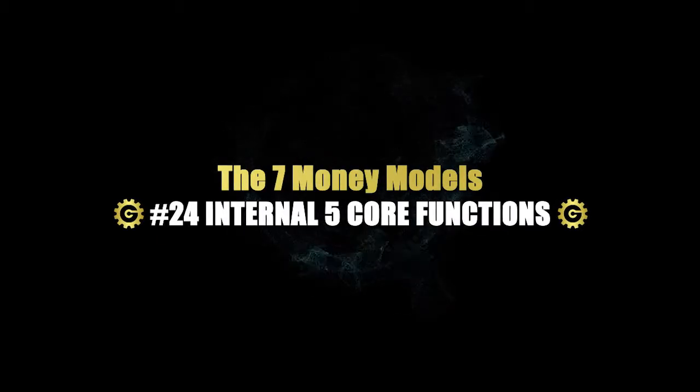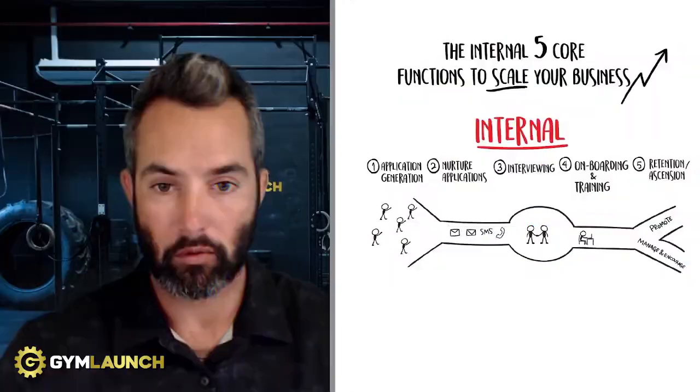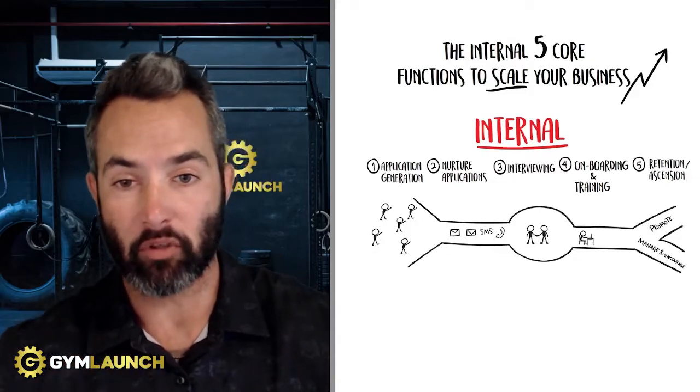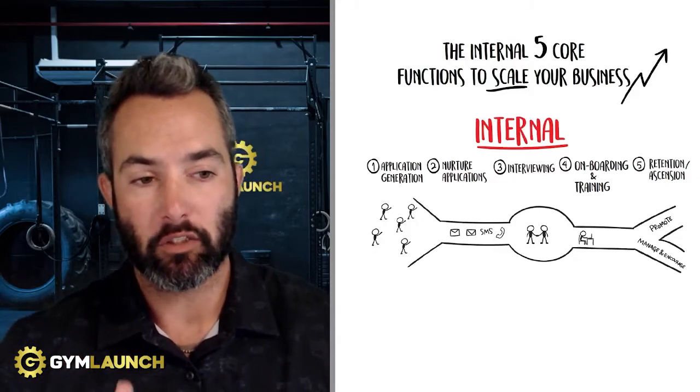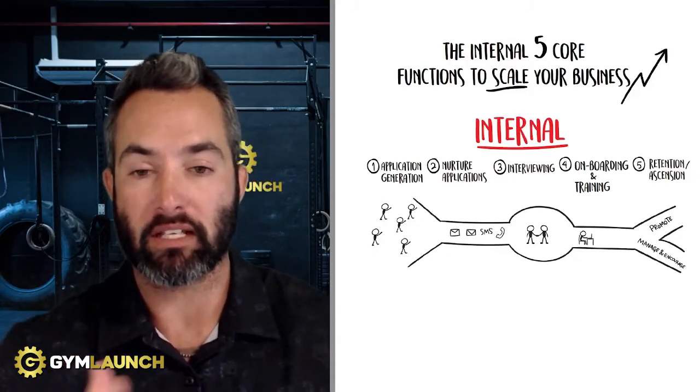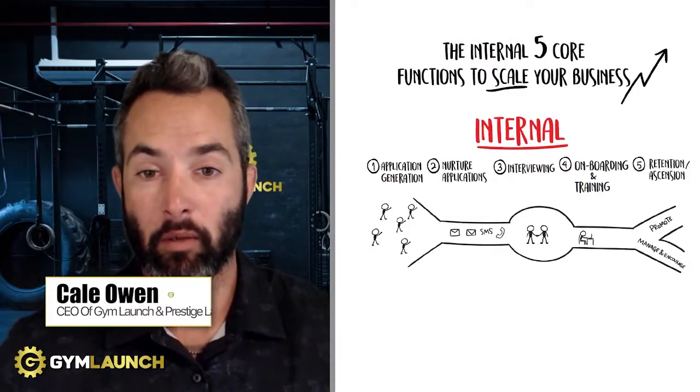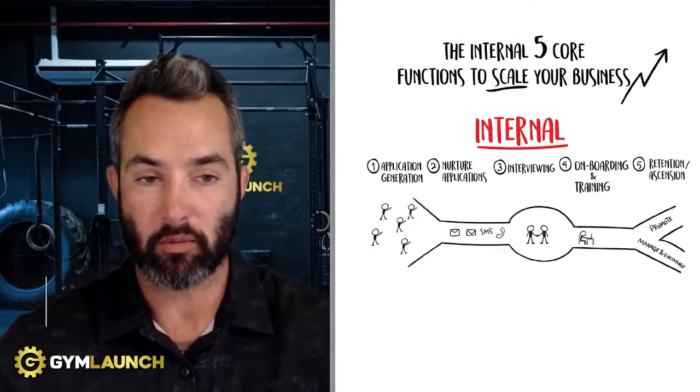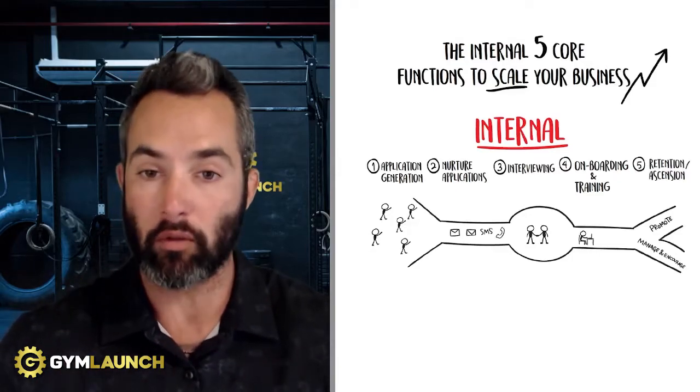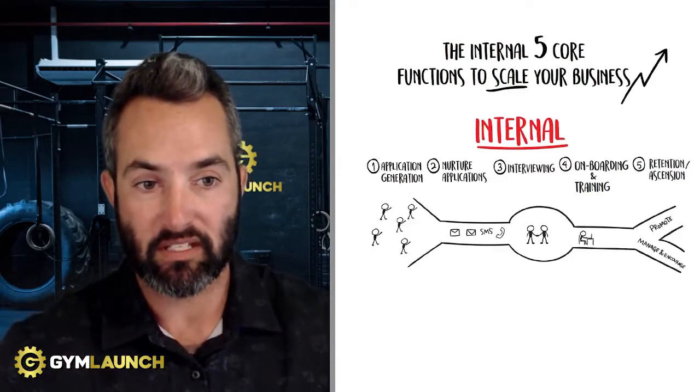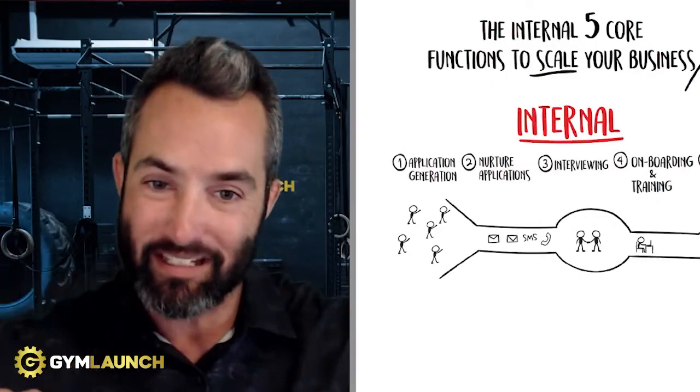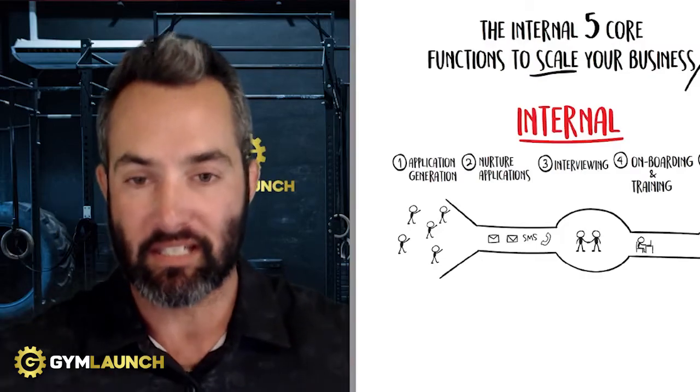If you want to grow and scale your business, here are the internal five core functions that you're going to need to scale your business and what we have learned at Gym Launch and Prestige Labs to grow to over $100 million in revenue over the last five years. My name is Kale Owen. I'm the CEO of Gym Launch and Prestige Labs. And our vision here is to help gym owners around the world reach more people, change more lives, and stack a whole bunch of cash. In this section, I want to walk you through how we think about going out and building and scaling your teams.